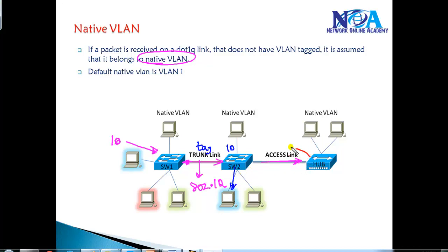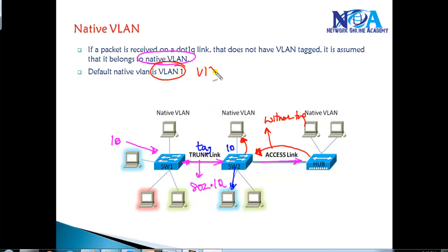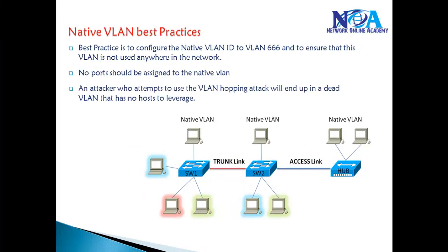There are cases where you may receive a frame without a tag — for example, from hubs, which don't understand tagging or the concept of VLANs. Whenever a switch receives any frame without a tag, it assumes it belongs to the native VLAN and forwards it out of the ports belonging to that VLAN. By default, the native VLAN is VLAN 1.